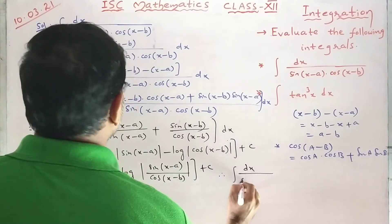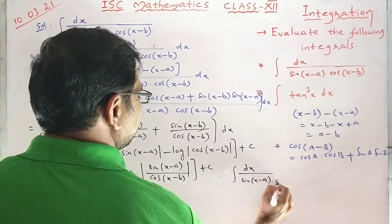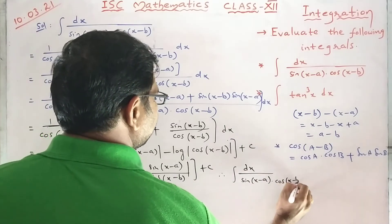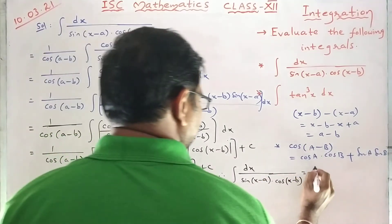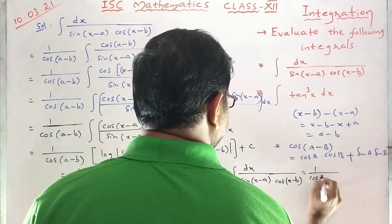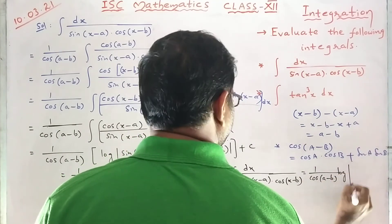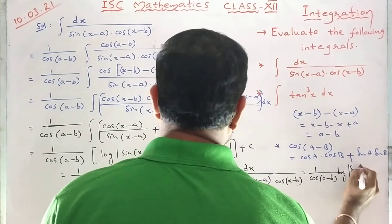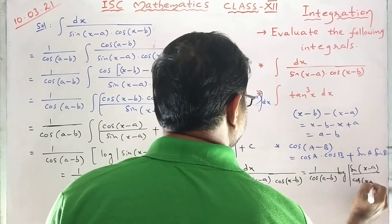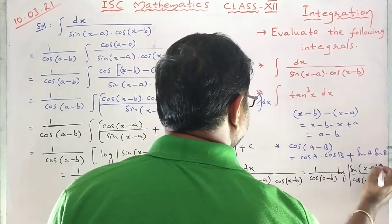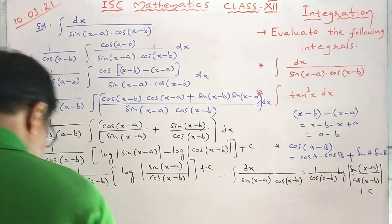Therefore, the integral of dx upon sin(x minus a) cos(x minus b) equals 1 by cos(a minus b) into log mod sin(x minus a) upon cos(x minus b) plus C. That is the end of the solution.